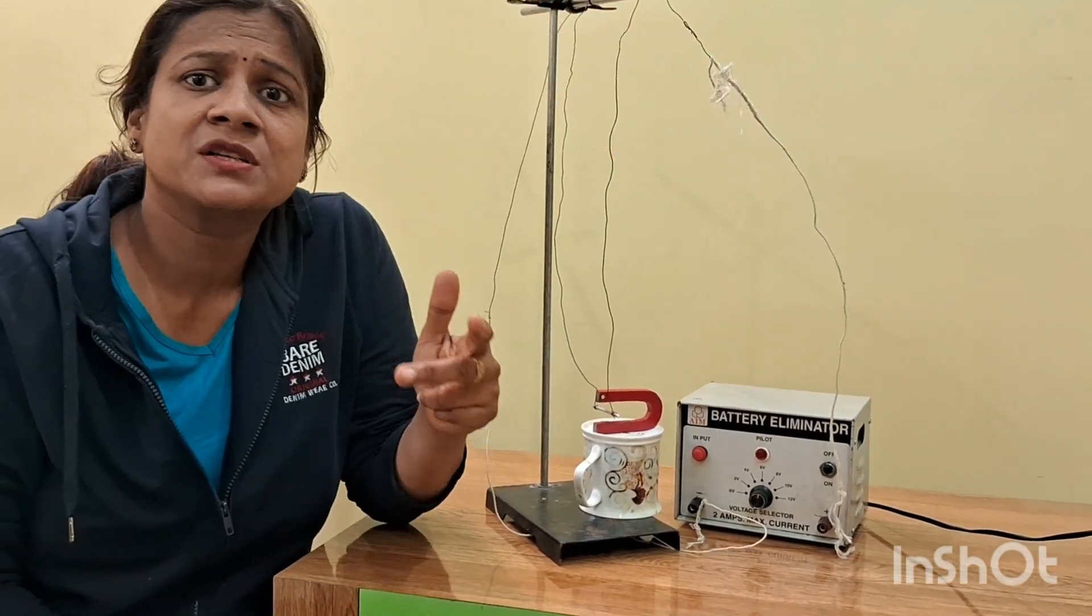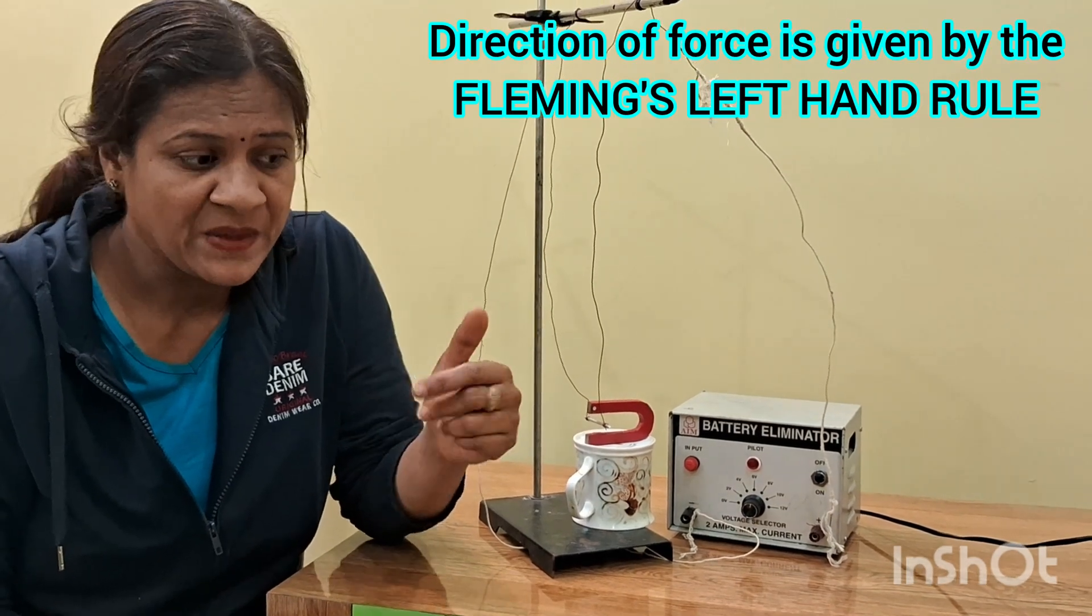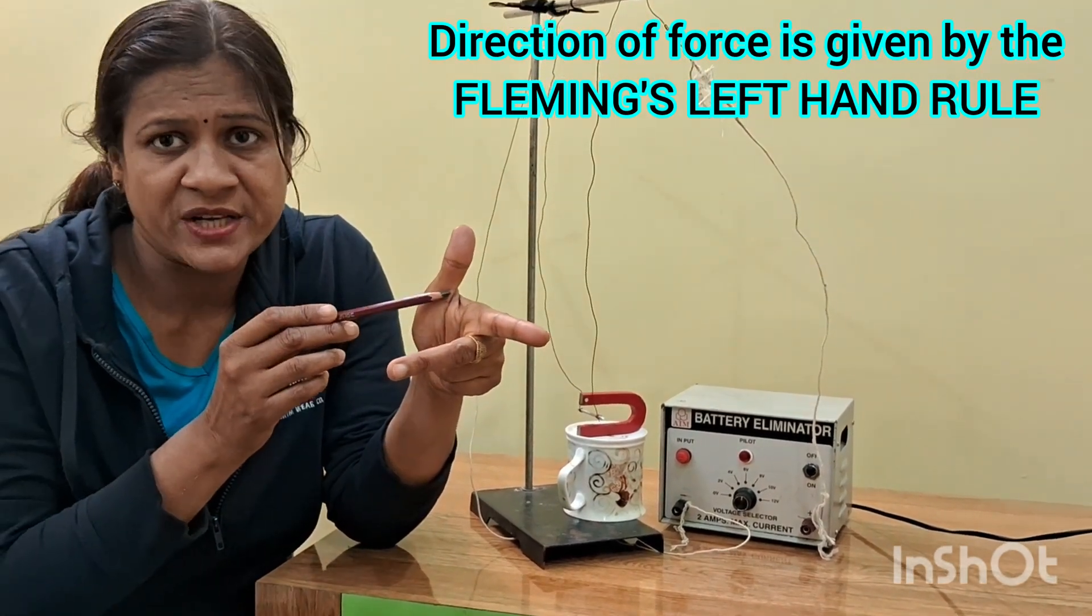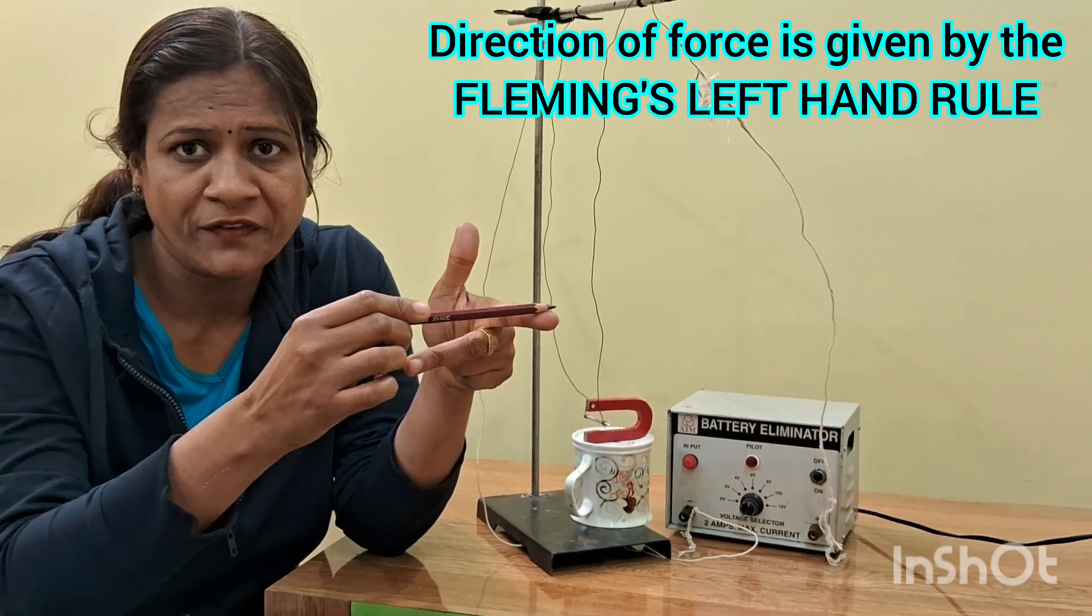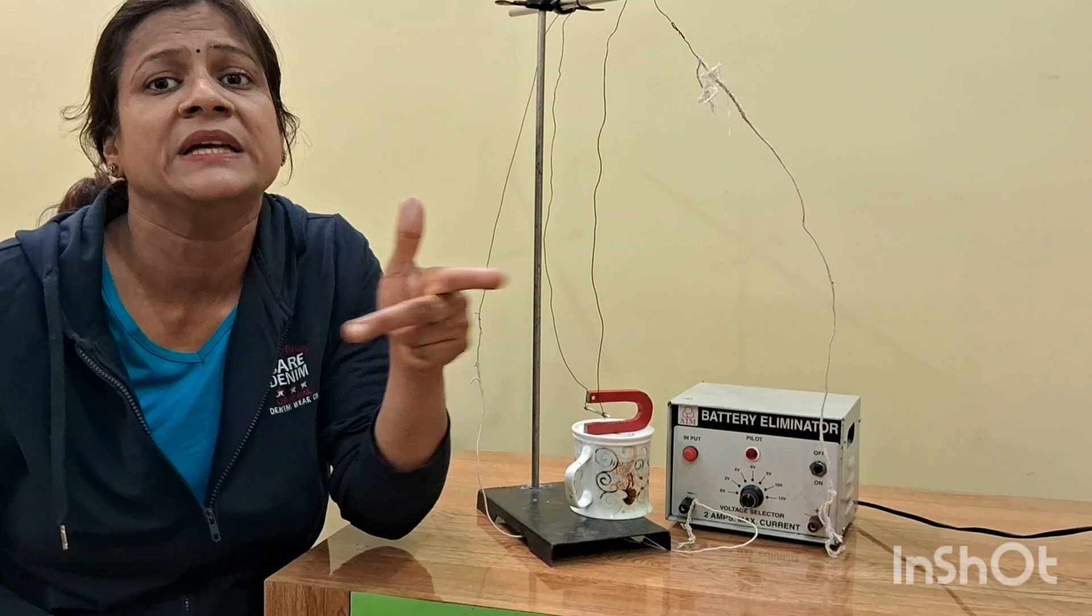To understand which direction the force would act, theoretically we use Fleming's left hand rule. If we stretch our thumb, forefinger, middle finger such that these three are perpendicular to each other.